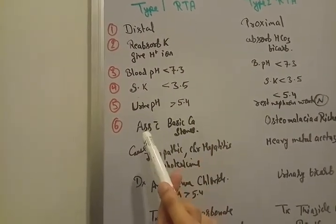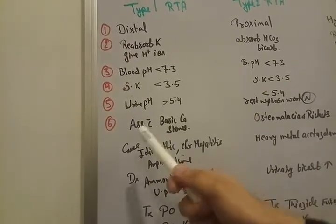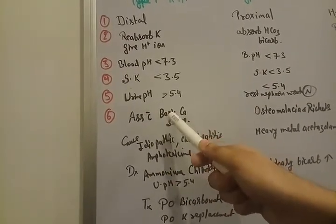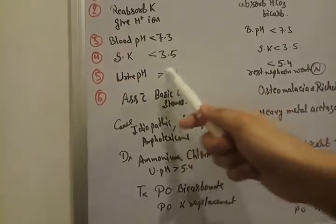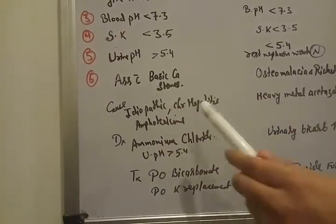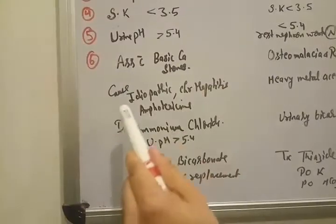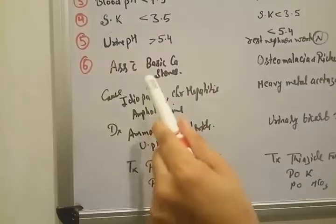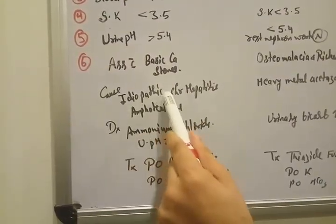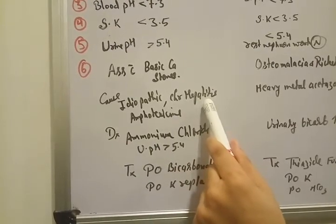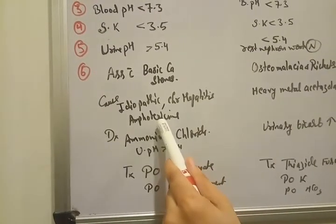And what was going to be happening in type 1? It is associated with stones. Calcium stone. Because basic urine responsible for the calcium stone. Calcium accumulation. What are the causes? Causes of type 1 RTA is idiopathic. Sometime chronic hepatitis. Sometime amphotericin. It will damage the distal tubules.